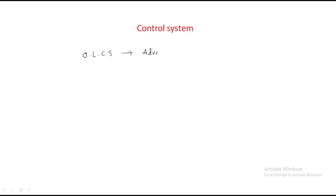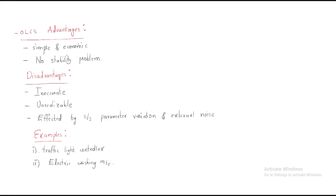Hello everyone. In this session we discuss the open-loop control system advantages and disadvantages, as well as closed-loop control system advantages and disadvantages with examples. Every control system — open-loop as well as closed-loop — has its own advantages and disadvantages.